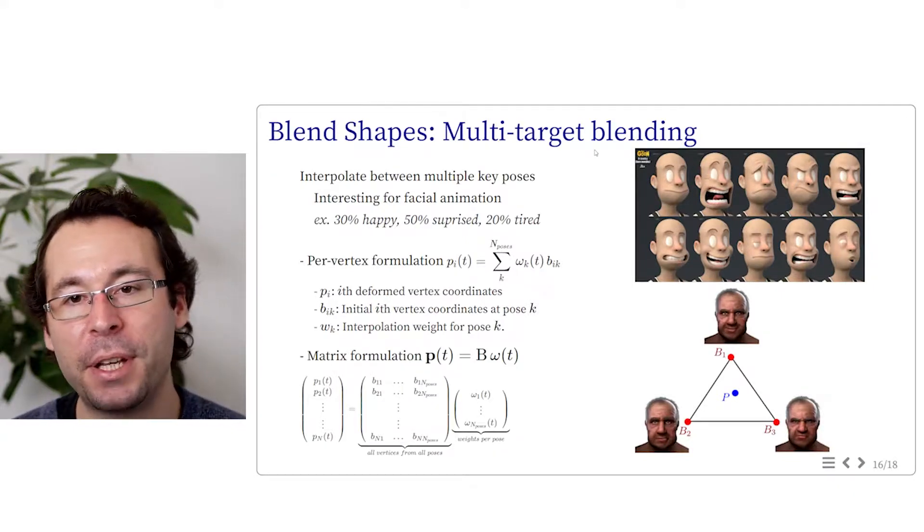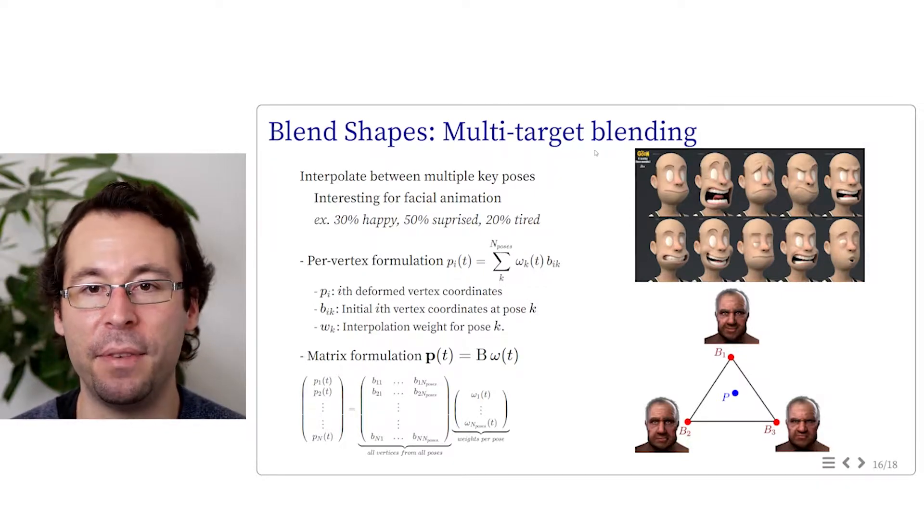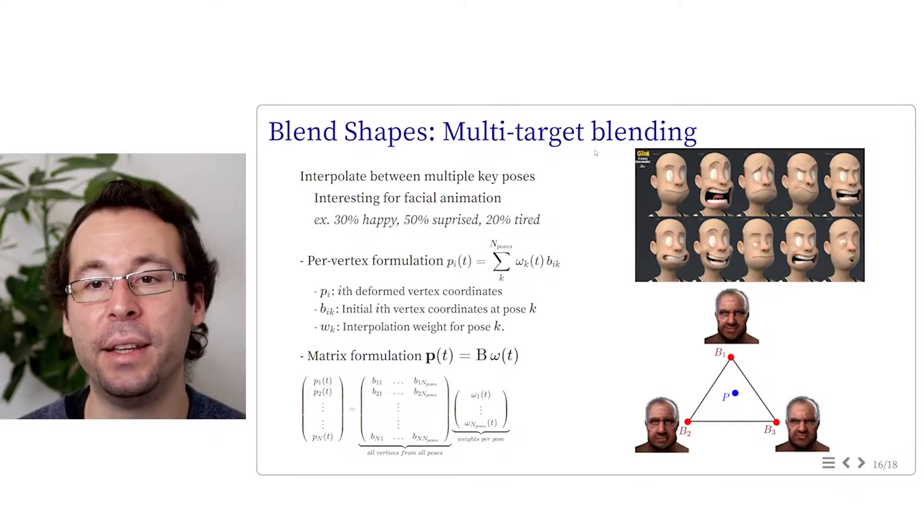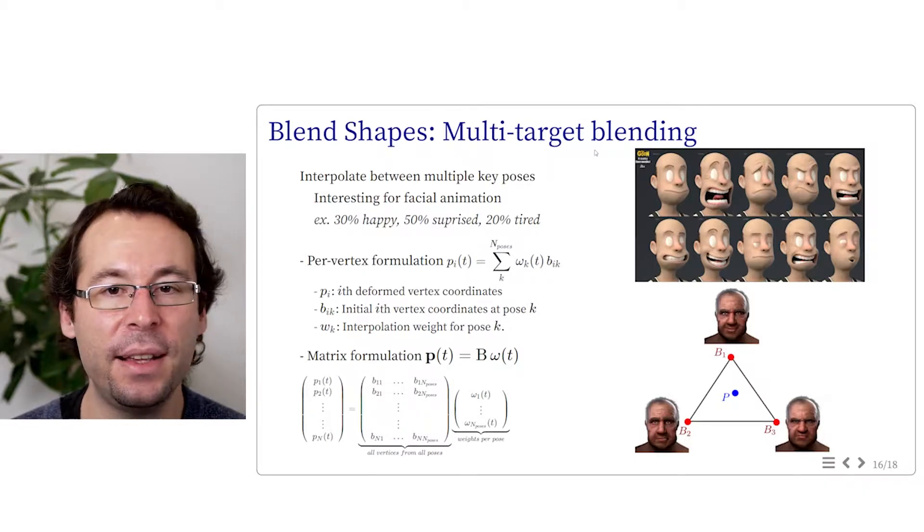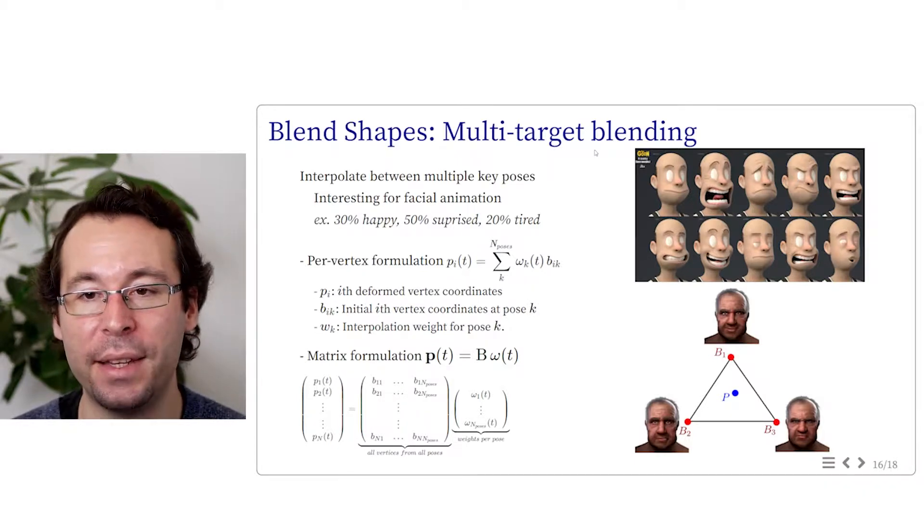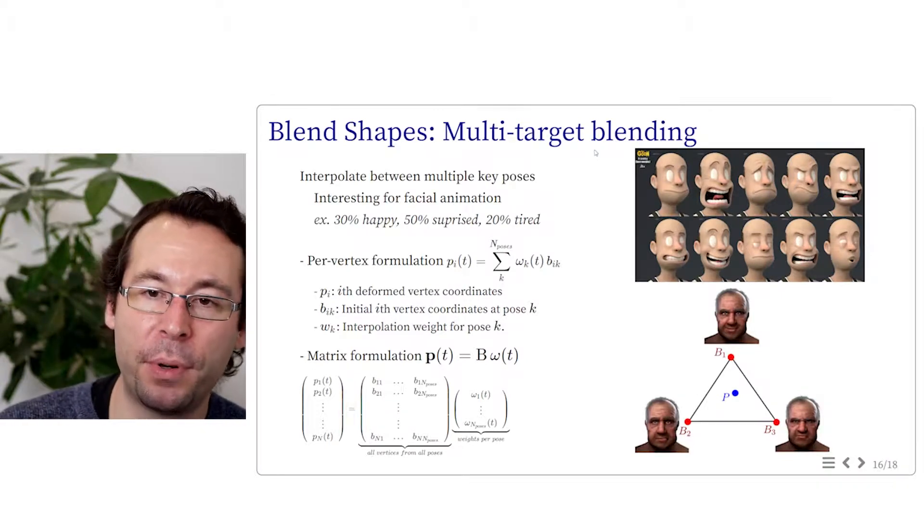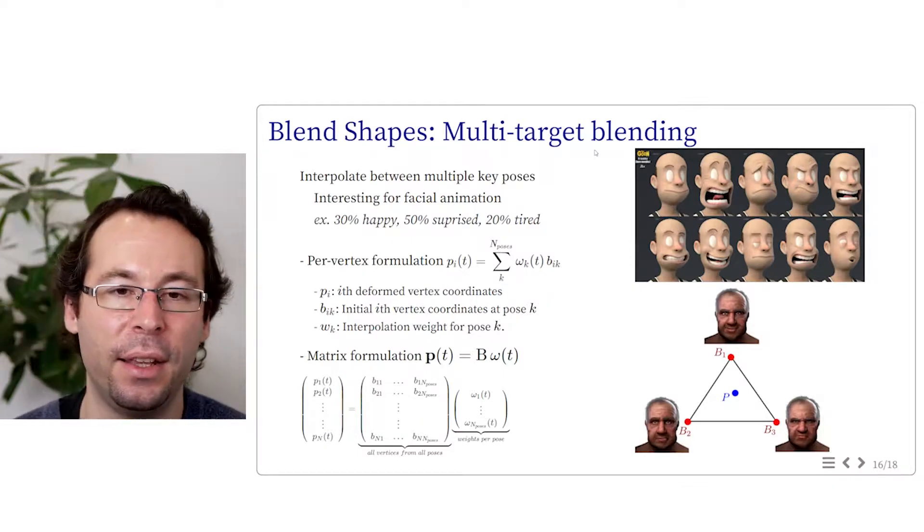Another way to express this barycentric relation is to use a matrix form and say that p equals b omega, with this time p being a big vector containing all the vertices' position of the mesh. Omega is all the n-pose weights. And b is the tall matrix with all the positions of all the vertices and all the poses in the other direction.